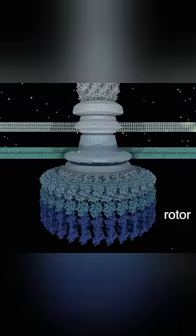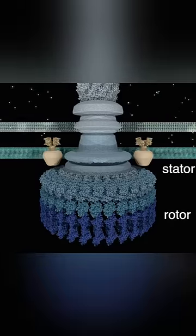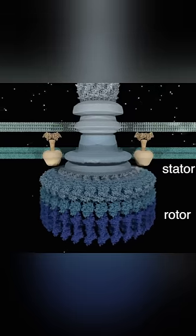Membrane rings make up the rotor and ions interact between the stator and the rotor to generate torque. This converts electrochemical to mechanical energy with almost 100% efficiency.